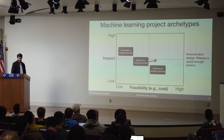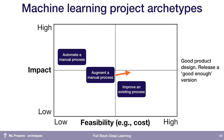For augmenting a manual process, the key to making these projects more feasible is good product design — I'll talk more about that on the next slide. The other important thing to do is try to release a good enough version as soon as possible, so that you can move from trying to augment a manual process from scratch to improving an existing process. Once you have something in production, you move down to that other category.